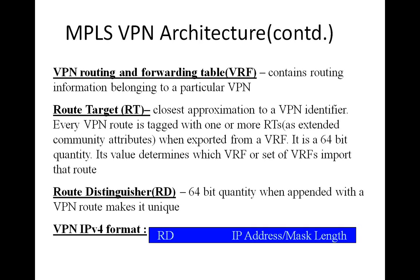As shown in blue just below, for every IP address that you learn, if you tag it with a route distinguisher, it makes that particular route unique. This means two different VPN customers can use the same IP address, but when paired with the route distinguisher — which is unique for each customer — the combined route becomes distinct.